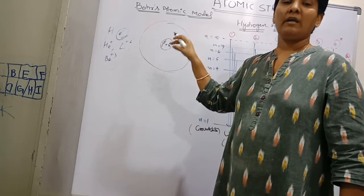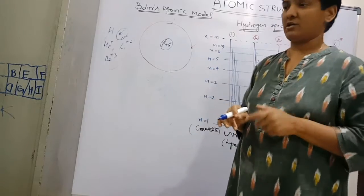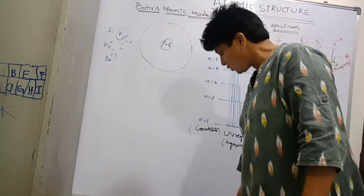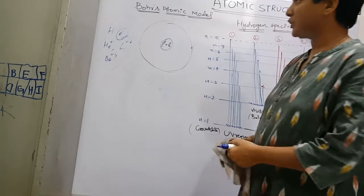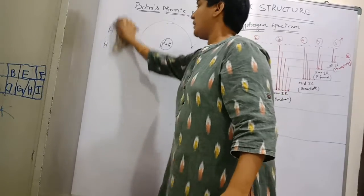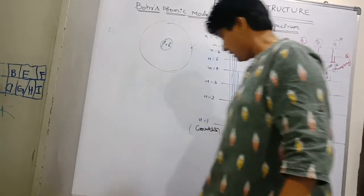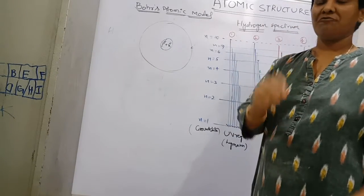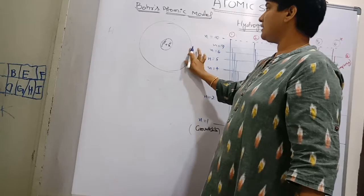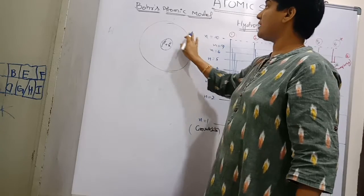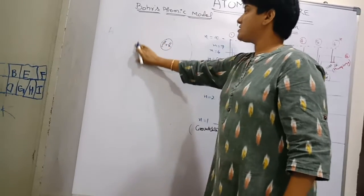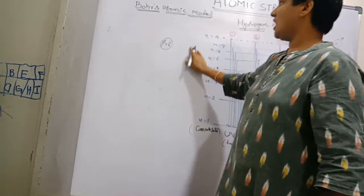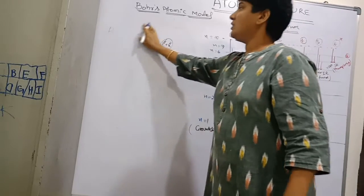According to Bohr's theory, as stated by Rutherford, the atom contains the spherical nucleus where all the positive charge and all the mass is present, and around this nucleus the electrons revolve.